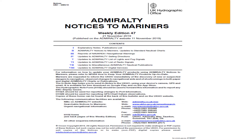This is the first page of the Admiralty Notices to Mariners. The Admiralty Notices to Mariners — sometimes also called the Admiralty Notices to Mariners Bulletin, or ANMNB — is published by the United Kingdom Hydrographic Office, as shown at the top of the notice. The UK Hydrographic Office is also known as the UK HO.